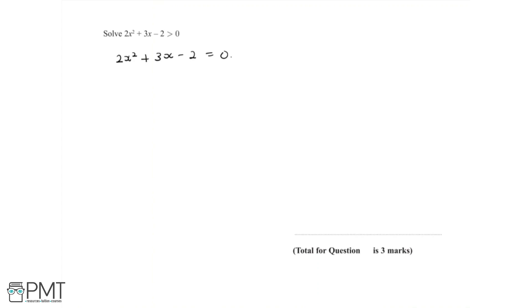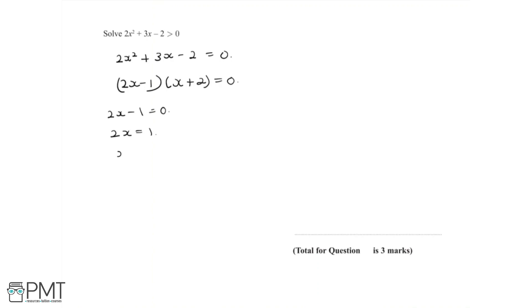When we factorise this, we'll get 2x minus 1 times x plus 2 is equal to zero. Now we can solve to find the values of x. So 2x minus 1 equals zero, meaning 2x is equal to 1, so x is equal to a half.